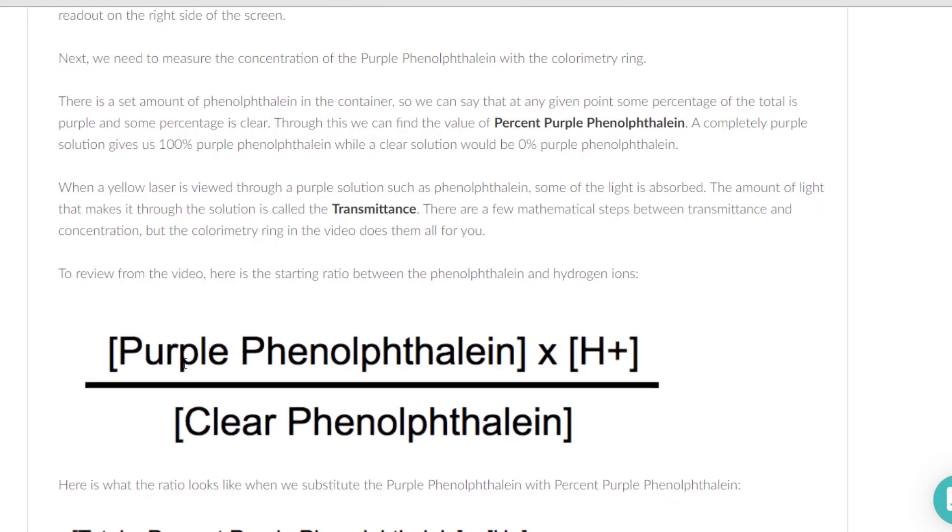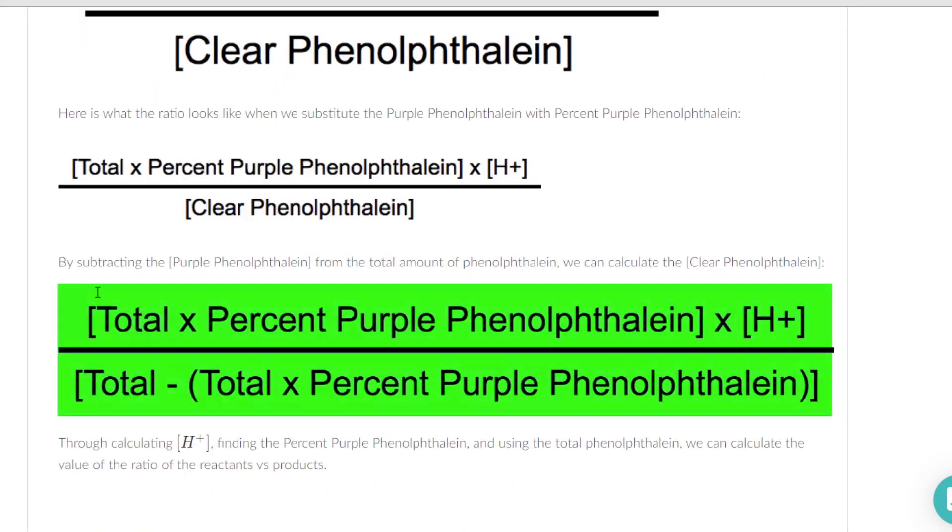So this becomes our K expression, the products over the reactants. And the way we find the purple phenolphthalein is we can measure the absorbance of light. And the way we find the clear phenolphthalein is we can know how much purple we started with and then we can know how much purple is left. And by subtracting those two, we can get the idea of how much of the purple turned into clear.